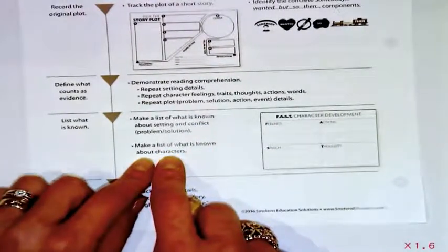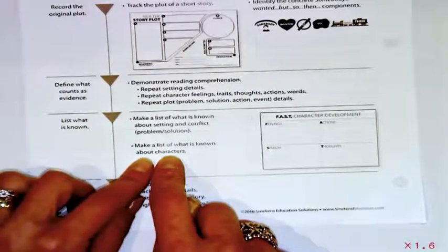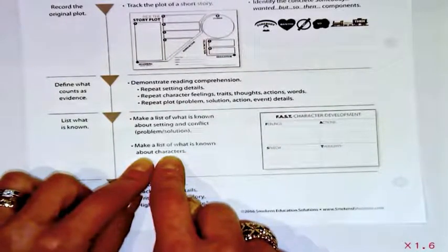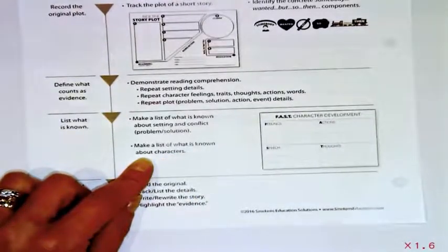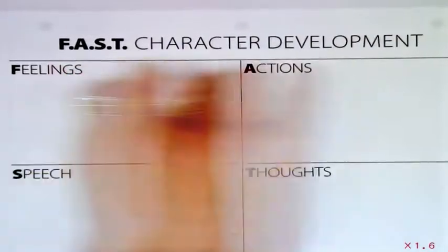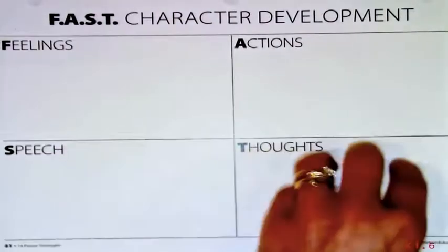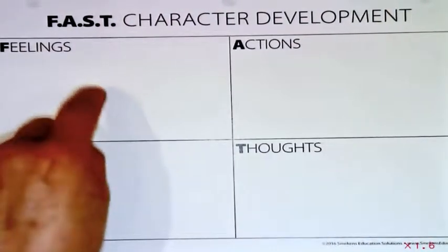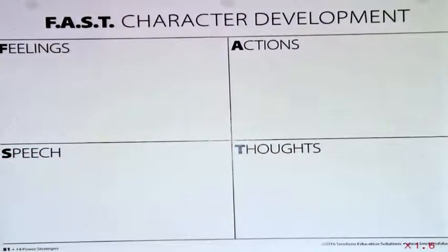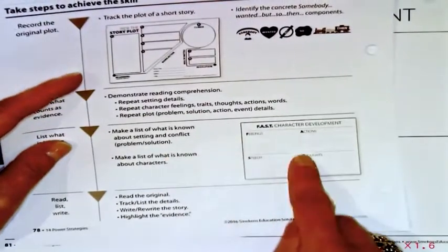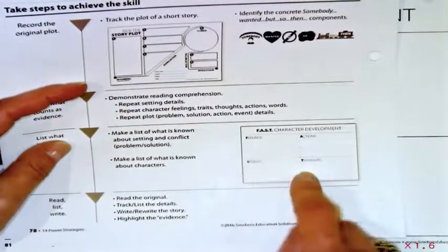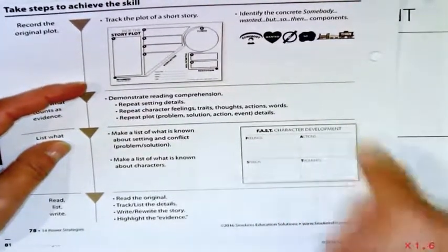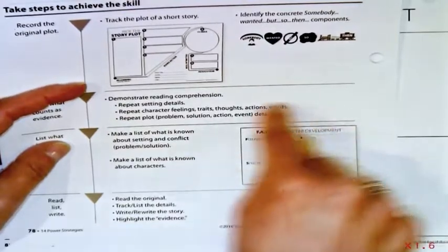What do we know about the characters? What do we know about the fast facts of the characters? Authors develop characters using FAST. FAST is an acronym. They develop characters with feelings, actions, speech or dialogue, and thoughts. If you're going to write this from a different character's point of view, you better have a good handle on that different character. What do we know about that character? Because you want to make sure to weave that in.